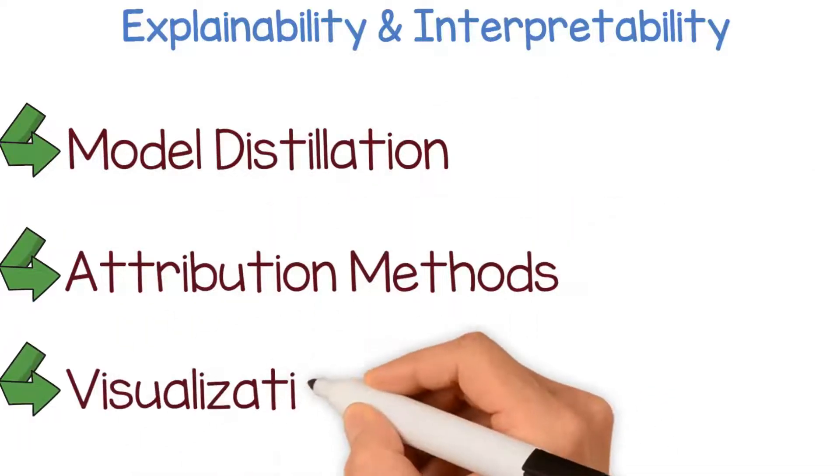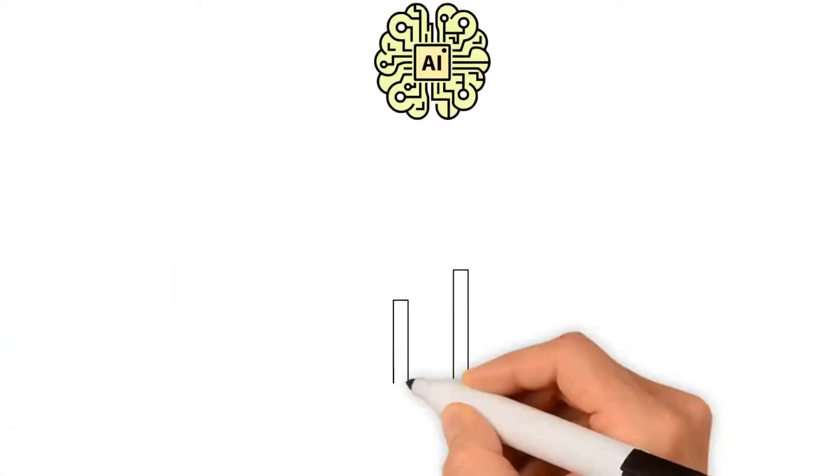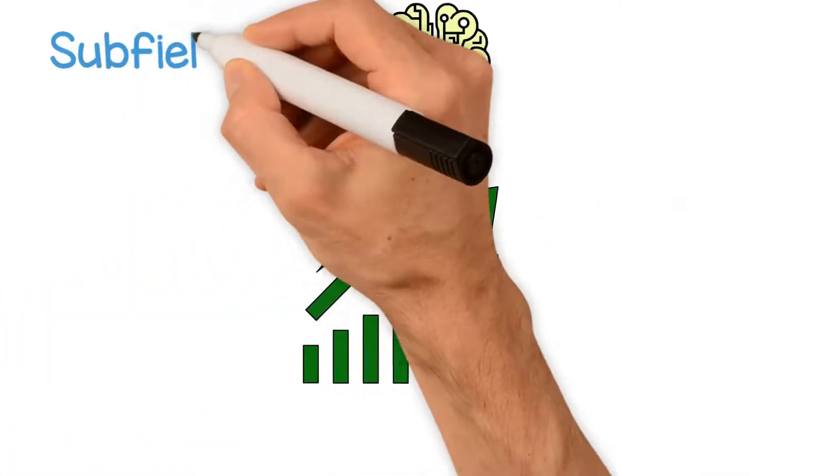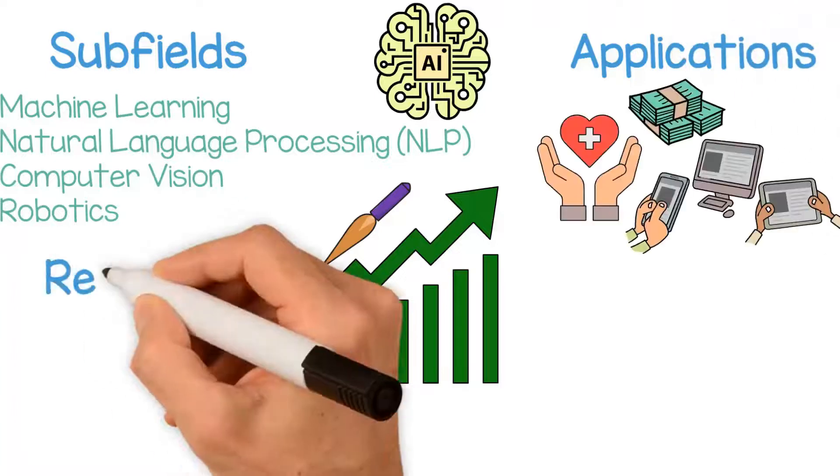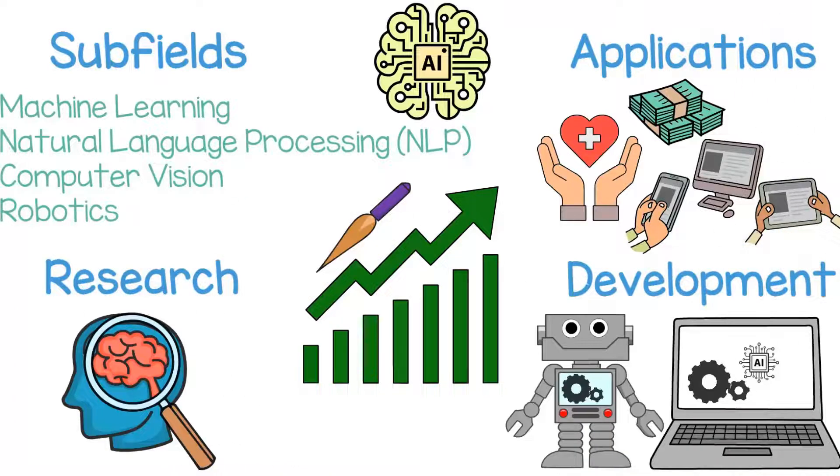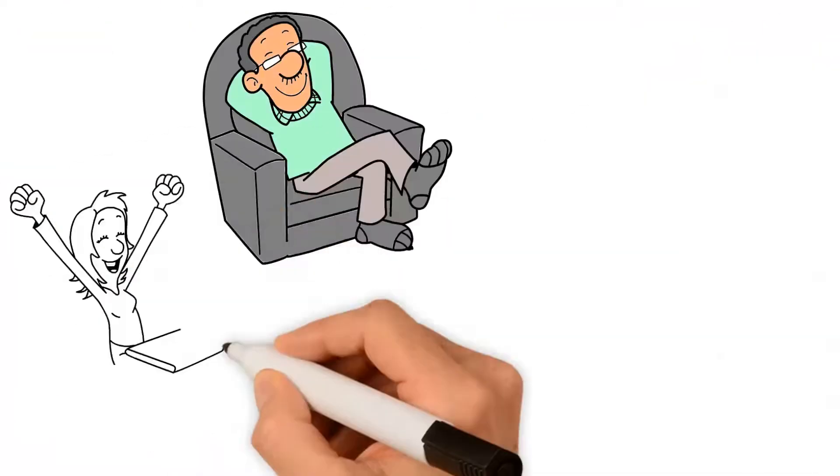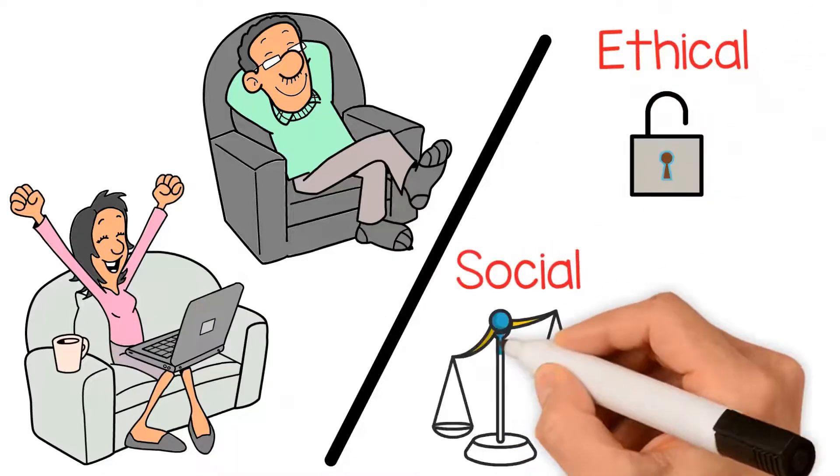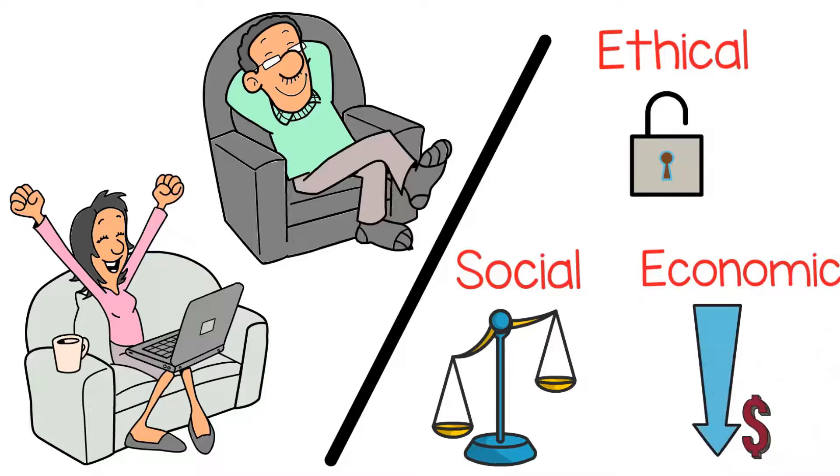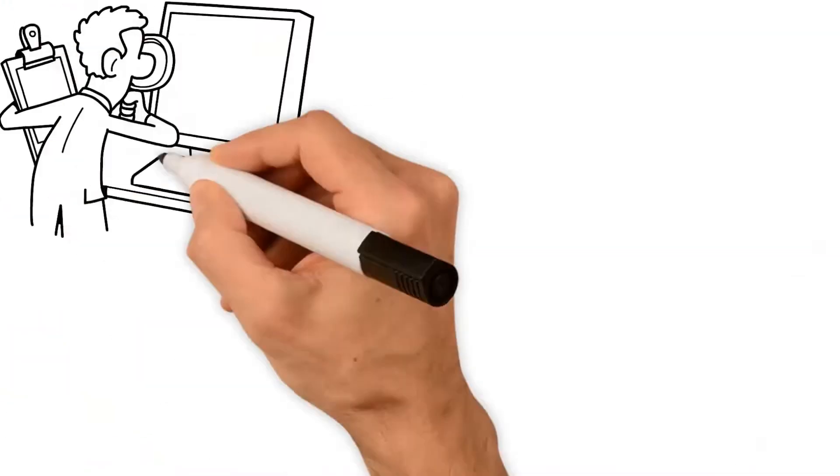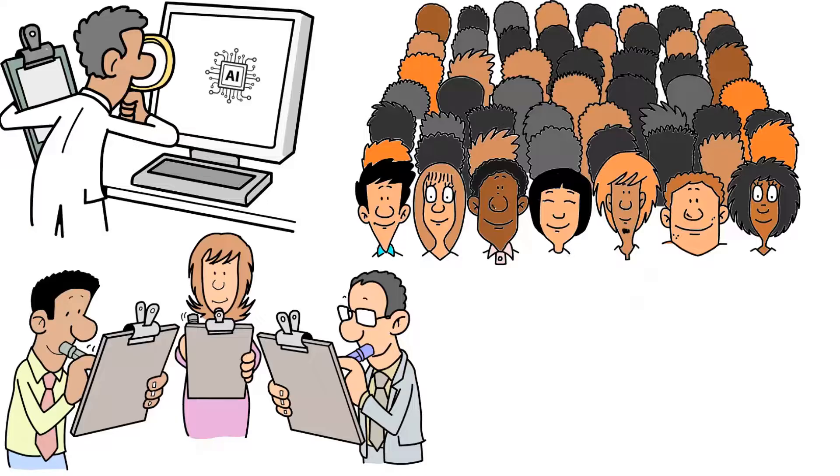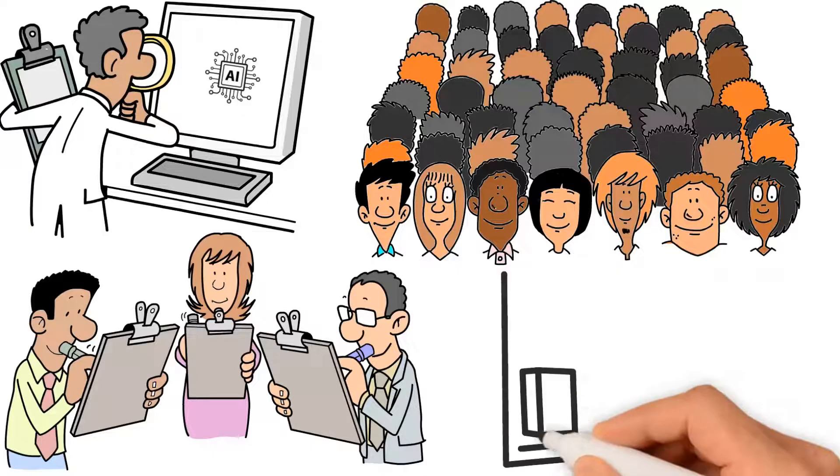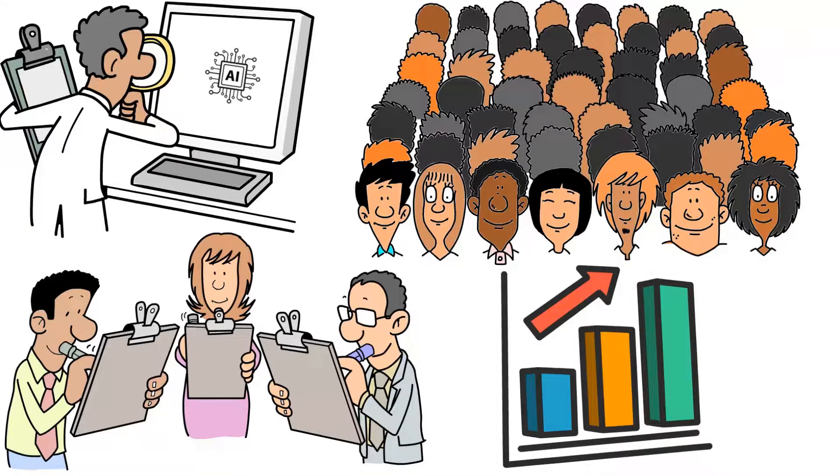In conclusion, AI is a broad and rapidly evolving field with many subfields and applications. With ongoing research and development, it has the potential to greatly benefit society, but also poses important ethical, social, and economic challenges. It's important for researchers, policymakers, and society to consider these challenges and work towards responsible and beneficial development of AI.